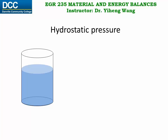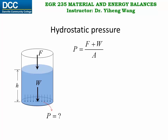Here we have a container with some fluid, and the height of the fluid is h. We want to know the pressure at the bottom of this container. Since pressure equals force over area, there are two forces we need to consider: the weight force of the fluid, W, and whatever resultant force on top of the fluid, F. Therefore, the pressure equals the total force F plus W over A, which equals F over A plus W over A. We notice that the term F over A does not depend on our fluid, so let's call it P zero and assume it's a constant.